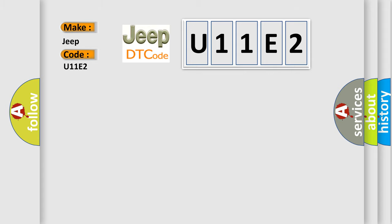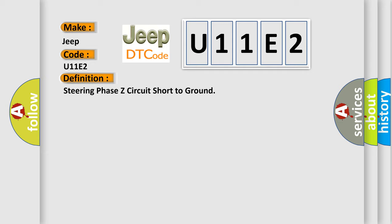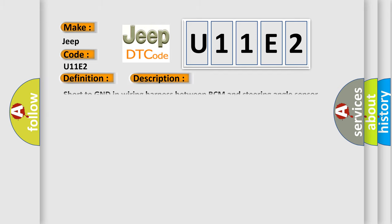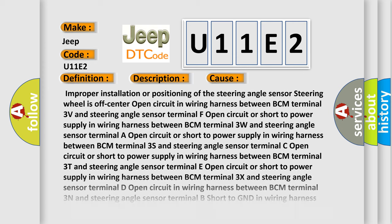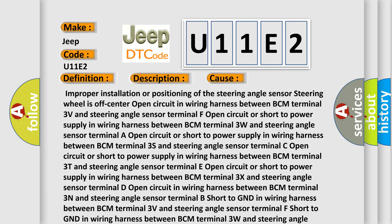The basic definition is: Steering Phase Z Circuit Short to Ground. This is a short description of this DTC code: short to GND in wiring harness between BCM and steering angle sensor. This diagnostic error occurs most often in these cases: improper installation or positioning of the steering angle sensor, steering wheel is off-center, or open circuit in wiring harness between BCM terminal 3V and steering angle sensor terminal F.